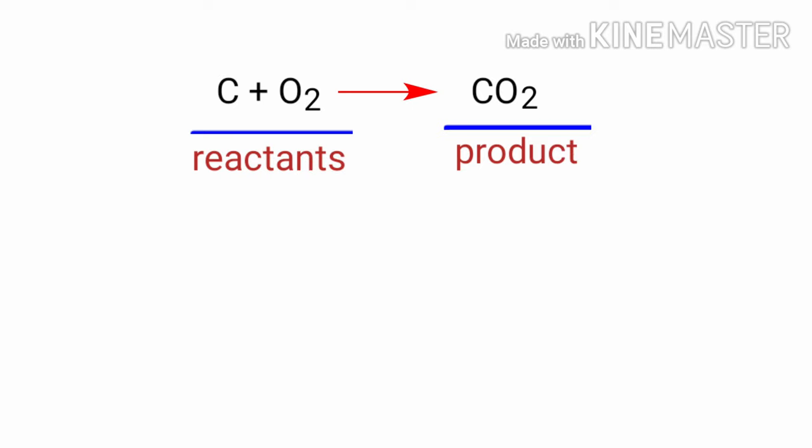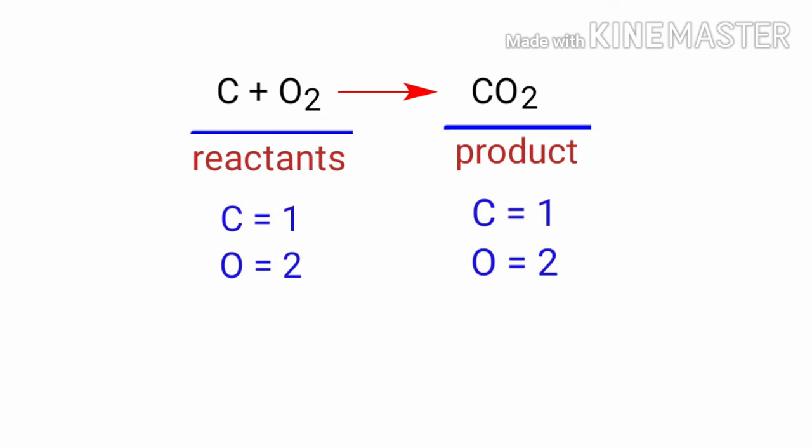In this equation, the reactants are Carbon and Oxygen, and the product is Carbon Dioxide. If you look at this equation, the number of atoms on the reactants' side are the same as the number of atoms on the product's side.